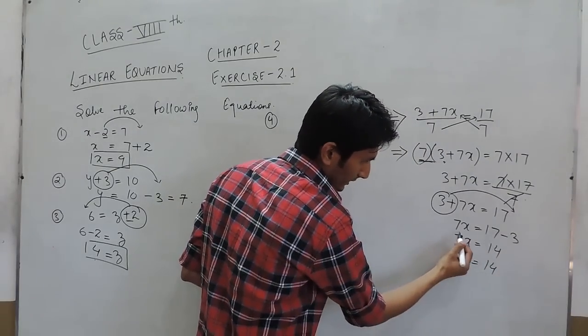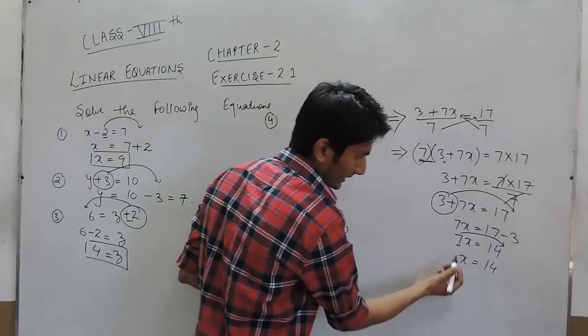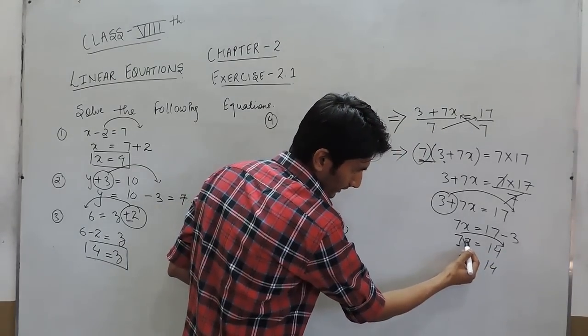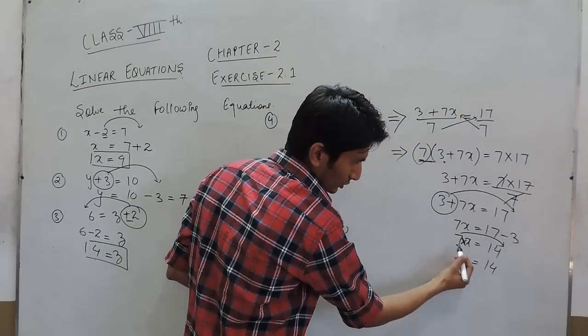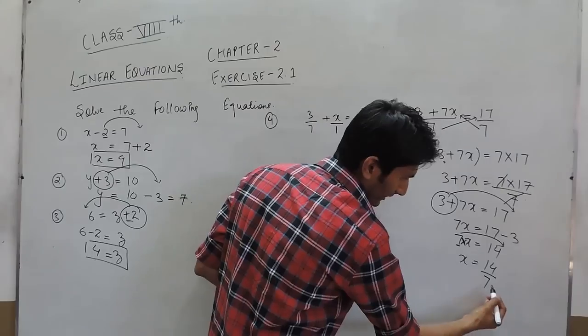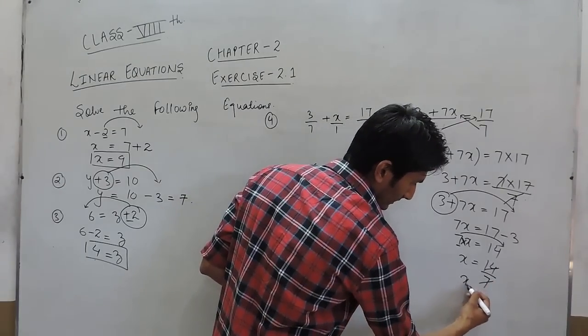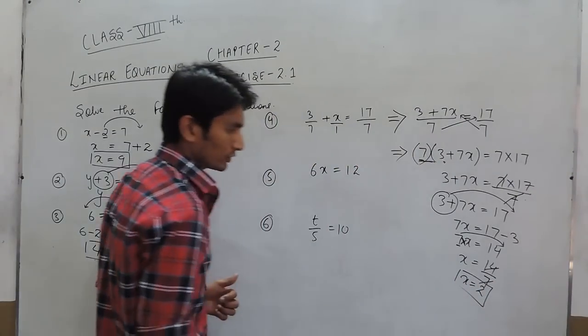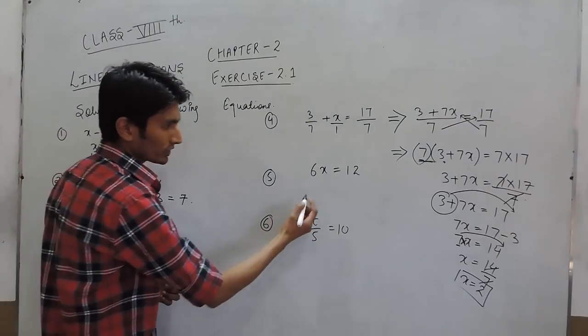Now this constant term, when it shifts to that side, because this is multiplying x, there it will divide. 14 divided by 7 and x would become 2.